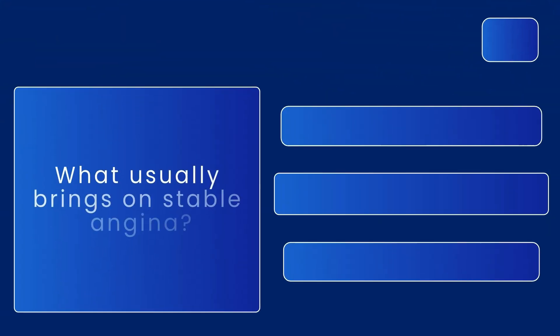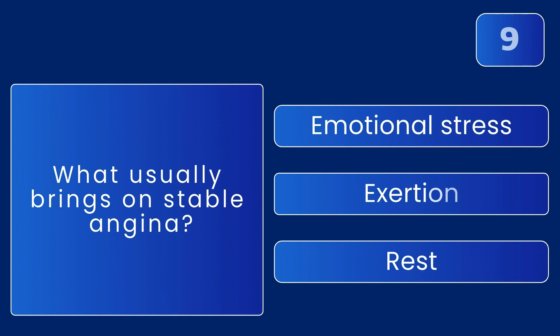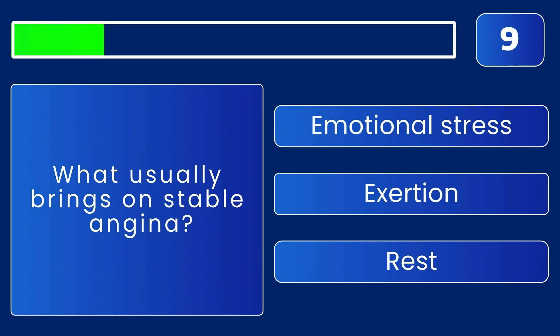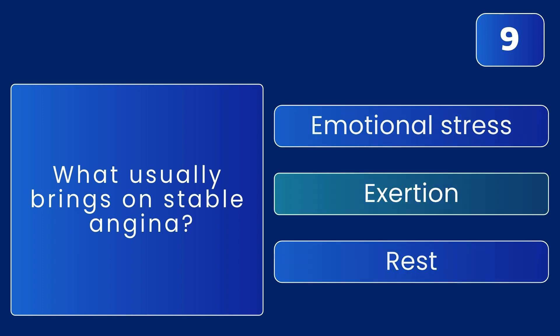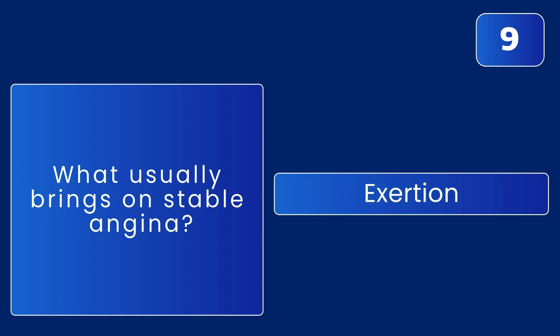What usually triggers unstable angina? The answer is exertion — physical activity increases the heart's demand.